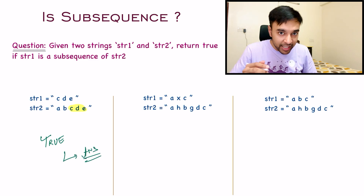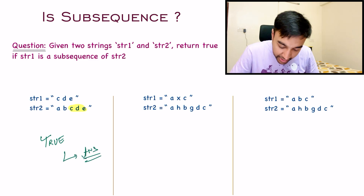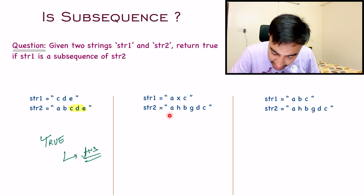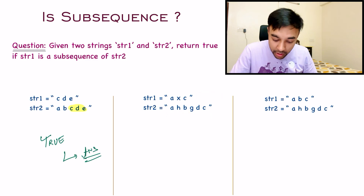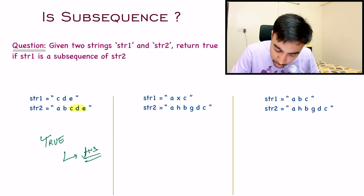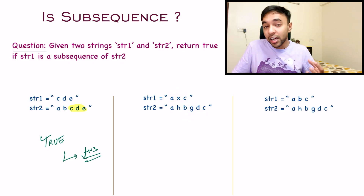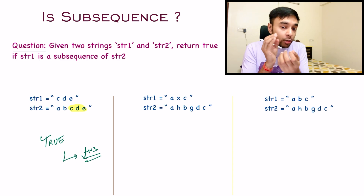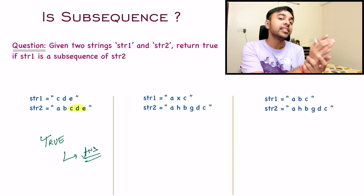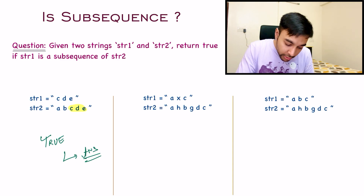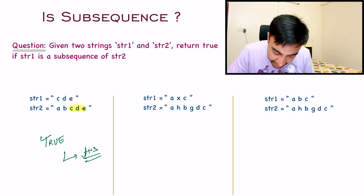Similarly, looking at our second test case, my first string is 'axc' and the second string is 'ahbgdc'. You can see that you cannot find 'x' anywhere in the second string. So naturally, you won't be able to find str1 in str2. For your second test case, you need to return false as your answer.